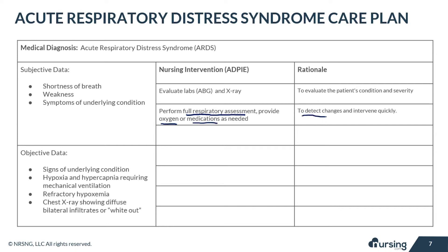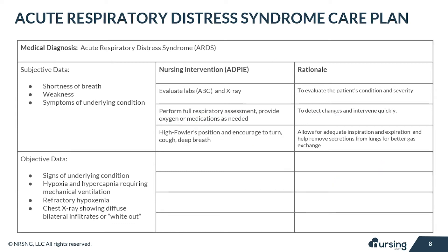Perform a full respiratory assessment and provide oxygen or medications as needed so that you can detect changes and intervene quickly. For example, if the patient is wheezing, a breathing treatment might help open those airways. Remember that oxygen is necessary for the body to function. If possible, place your patient in a high Fowler's position and encourage them to turn, cough, and deep breathe — this allows for adequate inspiration and expiration and helps remove secretions for better gas exchange.